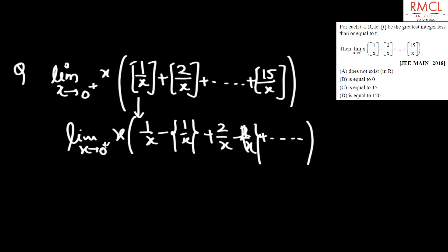The fractional parts will be eliminated by x. Multiply the remaining series by x. When x tending to 0 plus is applied, we get 1 upon x plus 2 upon x plus 3 upon x up to 15 upon x.